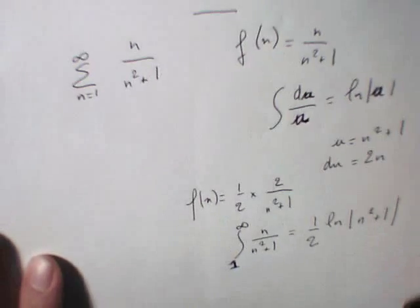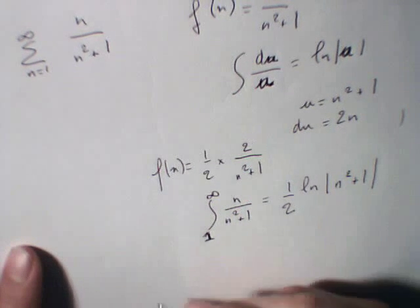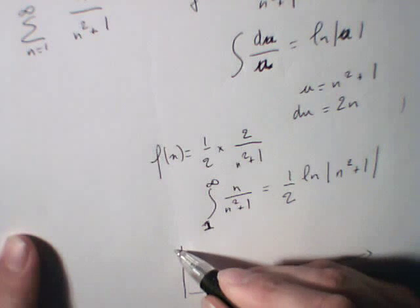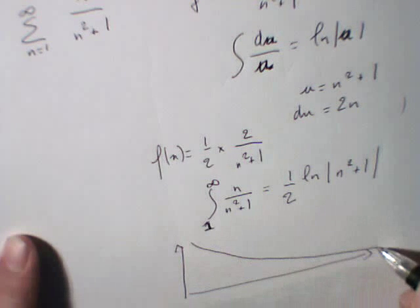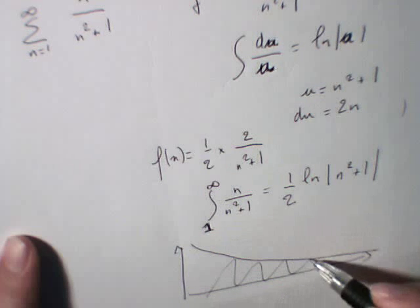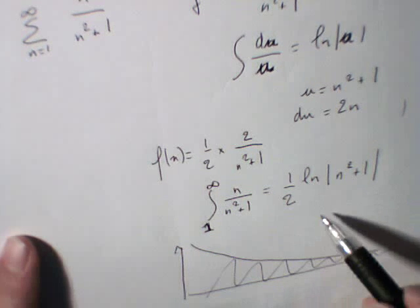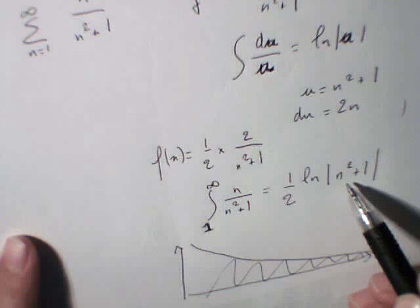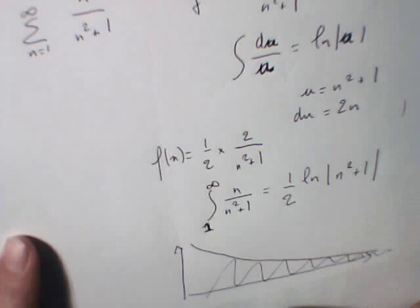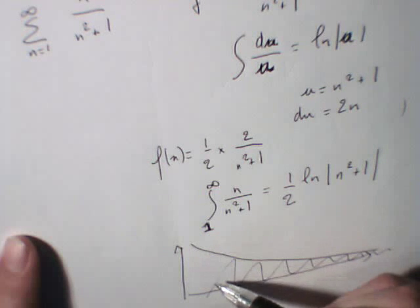And we know that, if you draw a graph of the series, you're going to have something like that. We know that the area there is going to be infinite, because ln of n turning towards infinity, ln of infinity squared plus 1 is going to be infinity, minus the constant that is going to be at 1.